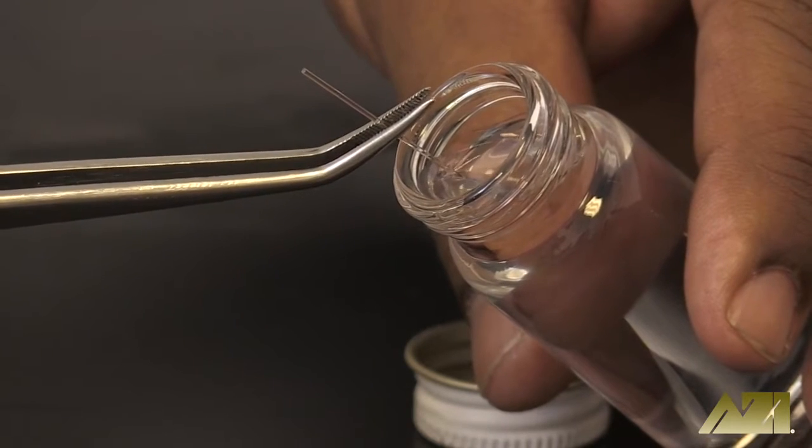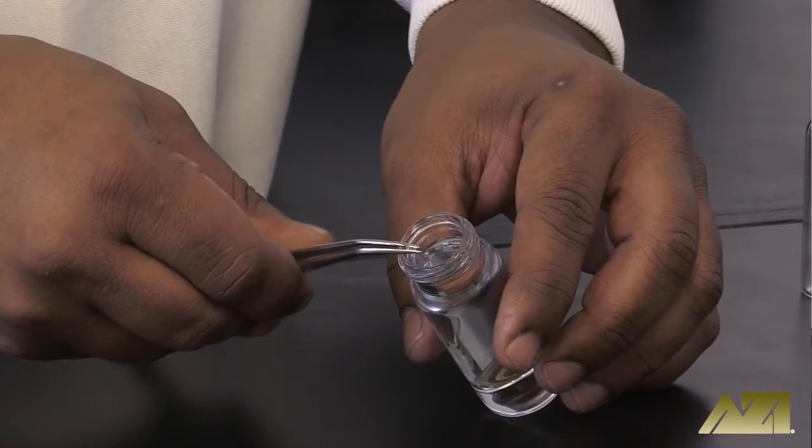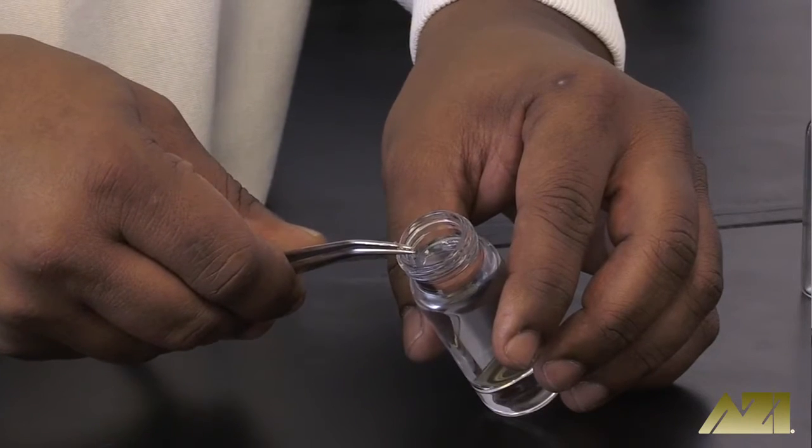If you're unable to see the water level, try filling over a black background. If you're still unable to see whether or not the tube is filled, simply hold the end of the capillary in the water for 10 to 15 seconds to ensure that it is filled.